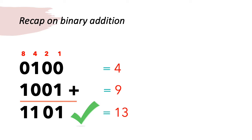We can check the answer by working out what each of these binary values is in binary. So the first value is 4, the second value is 9, and 4 plus 9 should be 13. If we check the answer 1101, we can see that this is indeed the binary value for 13.